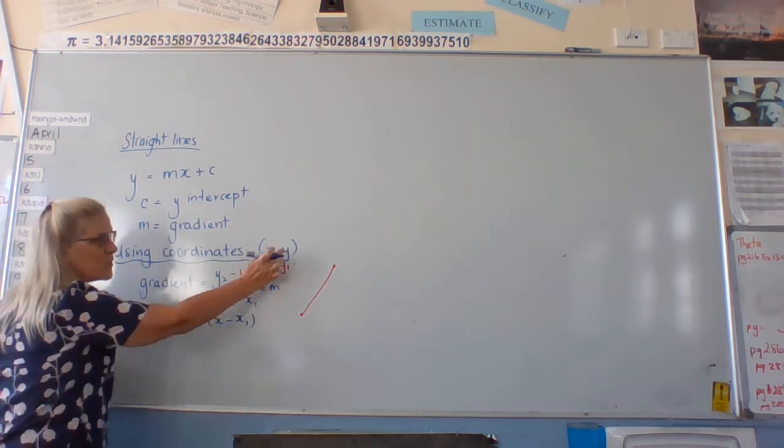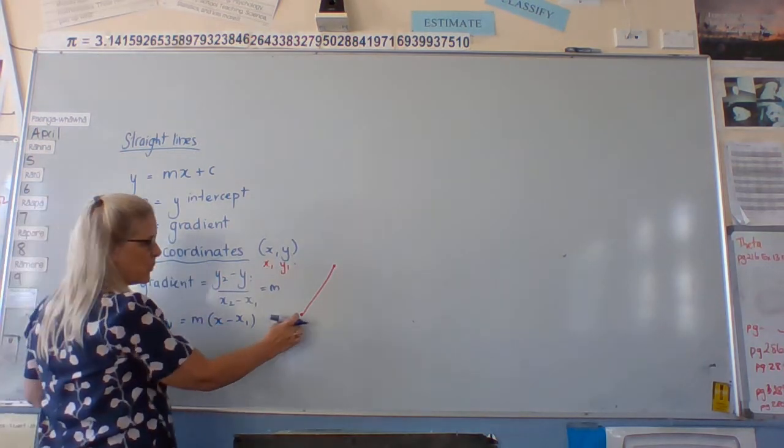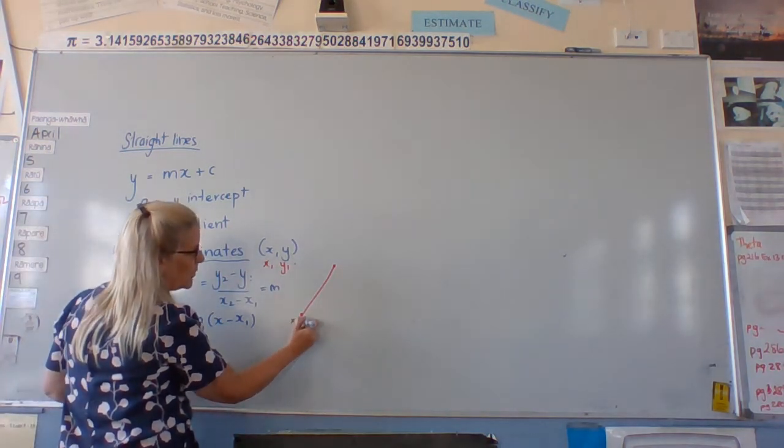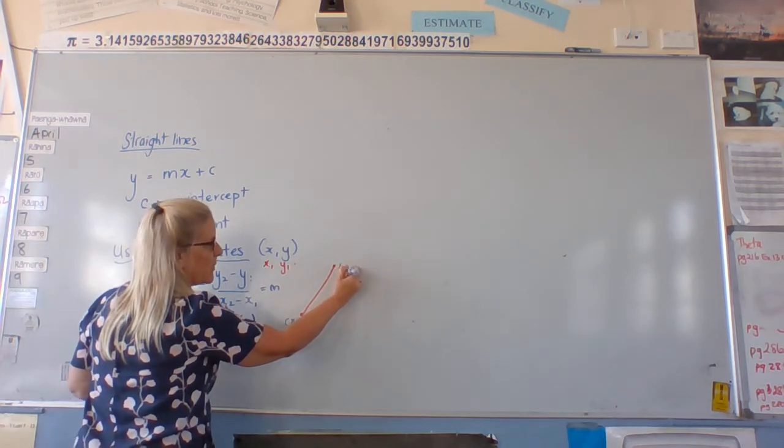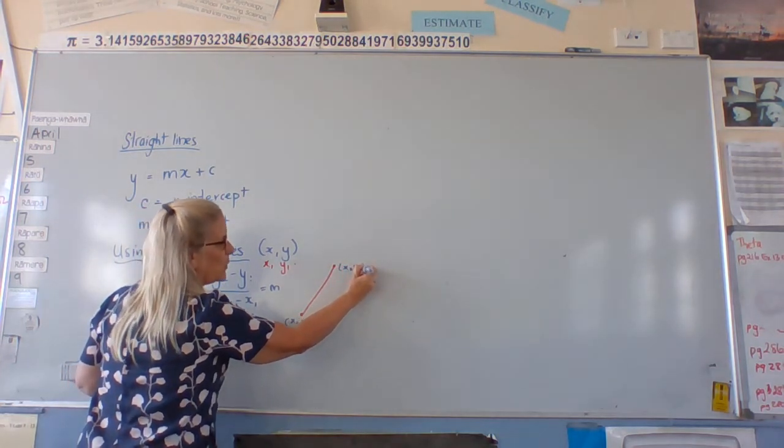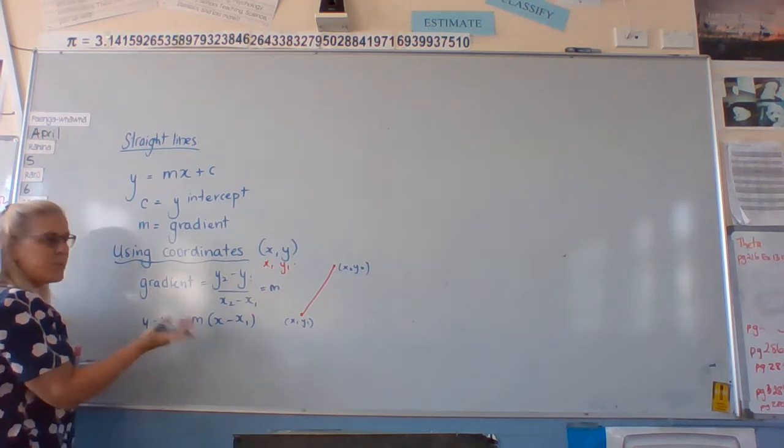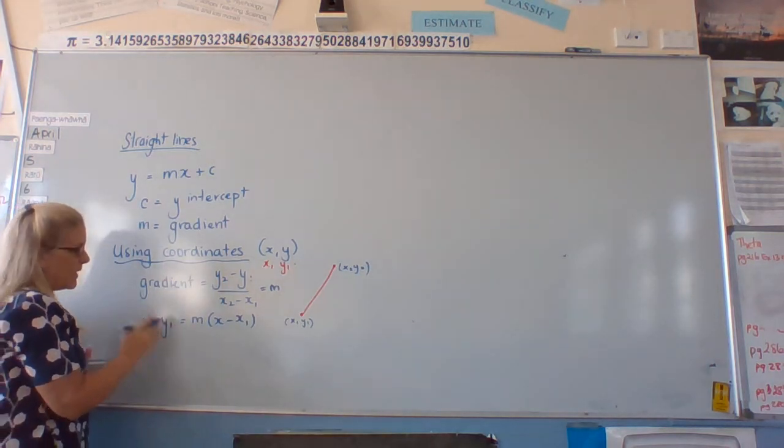So again, we're still using the first point of our two points. So it might be this one, x1, y1. This one up here would be x2, y2. As long as we use one of them, it wouldn't really matter which way round we label them.